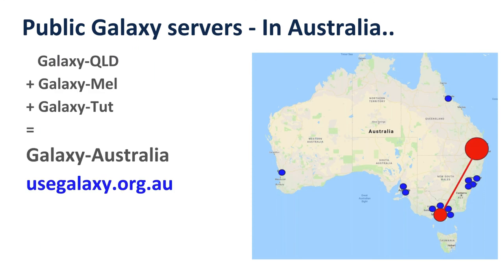As Gareth has already talked about, earlier this year we spent time amalgamating all the resources and compute for Galaxy Queensland, Galaxy Melbourne and Galaxy Tute to create Galaxy Australia. This is still a work in progress at the moment. It's based out of Brisbane, but there are nodes that will be in Melbourne and possibly other places. You can get to the new Galaxy Australia server at usegalaxy.org.au, which bears a striking resemblance to usegalaxy.org — Galaxy Main in the US.